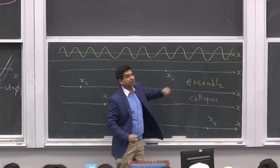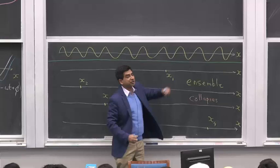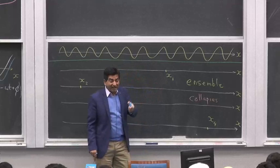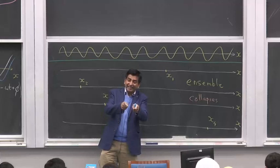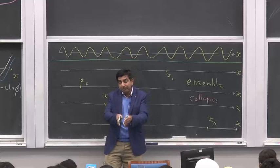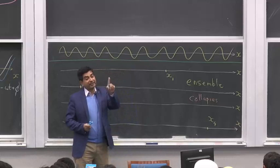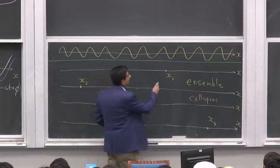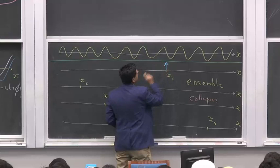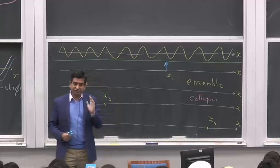If this is my wave function before measurement, now I have performed a measurement. Now I know that I have trapped the electron at position x₁ — I know the electron is indeed at x₁. With time it can go elsewhere, but at the precise time when I am making the measurement, I know it is going to be at x₁. Then I can answer the question: where is the electron? So now I have created a new state, and if I want to draw that state, I draw it as existing only at x₁ after measurement.